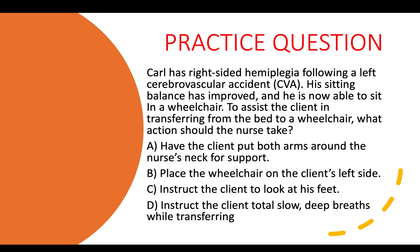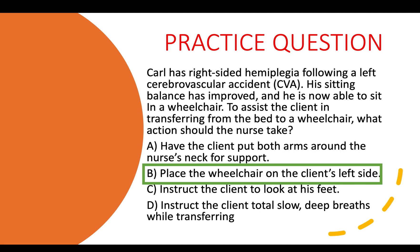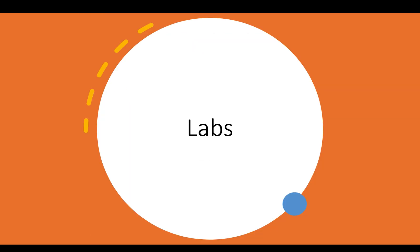This is a safety question. You would never put a client's arm around your neck as a nurse — that causes injury. The question states he has right-sided hemiplegia following a left CVA, meaning his right side is not strong and cannot support him. So you would place the wheelchair on the left side of the client. The correct answer is B. Read the question carefully and choose the answer that provides the most safety for the client.